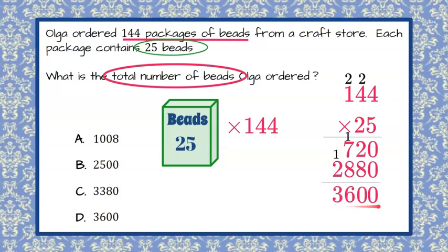So our answer is a total of 3,600 beads. Now let's look at our answer choices, and we can see that answer choice D is the correct selection and that Olga will have 3,600 beads with her order.